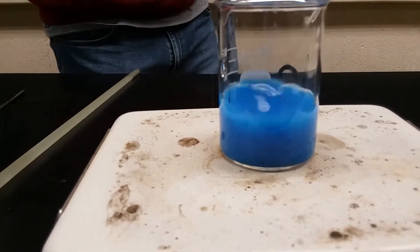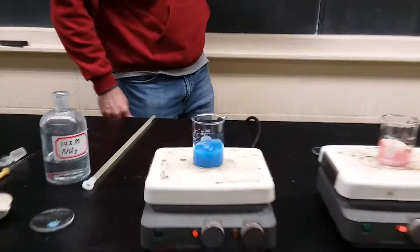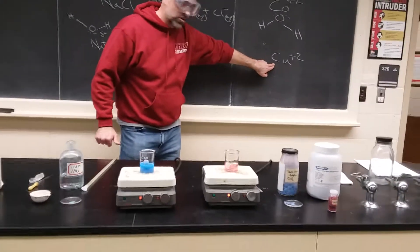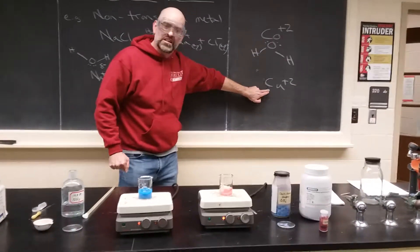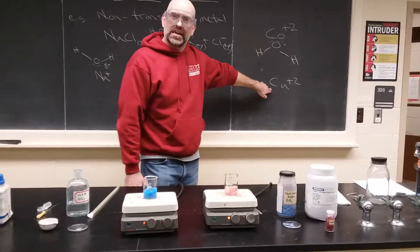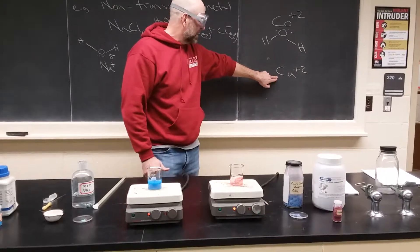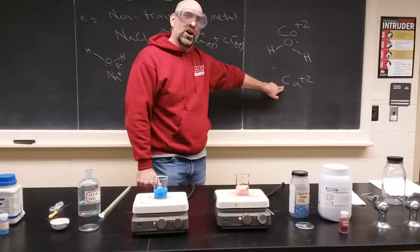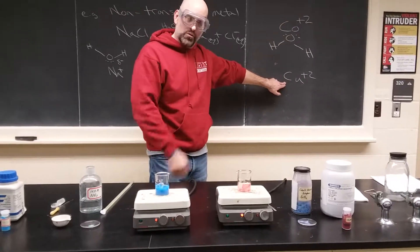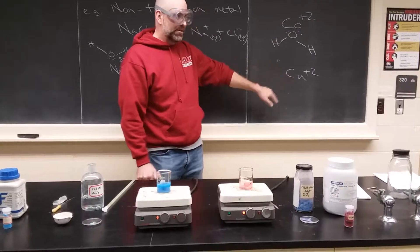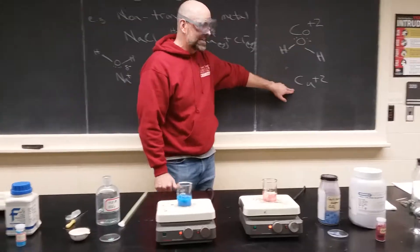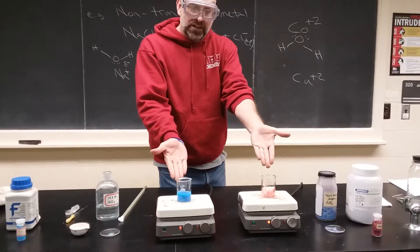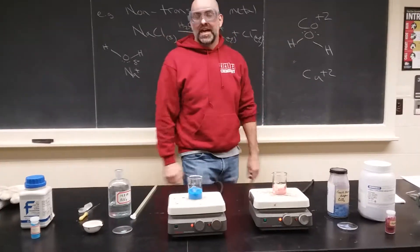It's the ammonia now that is surrounding and grabbing onto the copper ion, and it's a different color. Maybe that isn't obvious by looking there, but it becomes a different color. So what grabs onto the transition metal cation matters, and that's called a ligand. What we're going to learn about is the different chemistry between a transition metal cation and the different kinds of ligands that can grab onto it, and what kind of properties do they have.